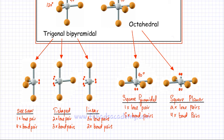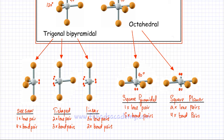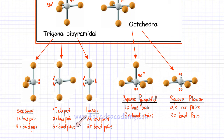Another version of this same shape is if you have two lone pairs instead of two bonds, leaving three bonds. On two sides there are lone pairs, which are not counted in the shape because there is no atom attached. Considering only the bonds and the atoms, this arrangement would be T-shaped. So if you have two lone pairs and three bonding pairs of electrons, that is a T-shaped arrangement.